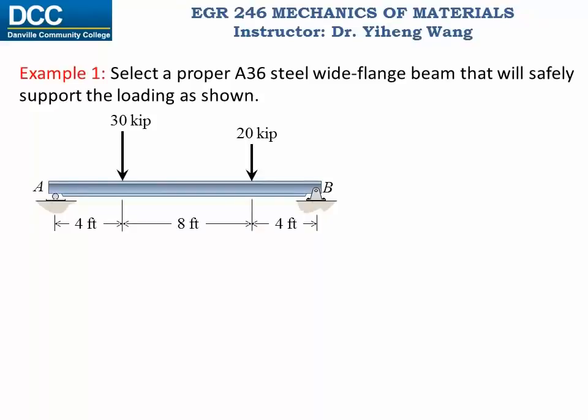Let's look at this example problem directly. In this example we are given a structure with applied loadings. We are told that this beam is made of A36 steel and it is a wide flange beam. We need to select a proper sectional shape for this beam so it will support the loadings safely.